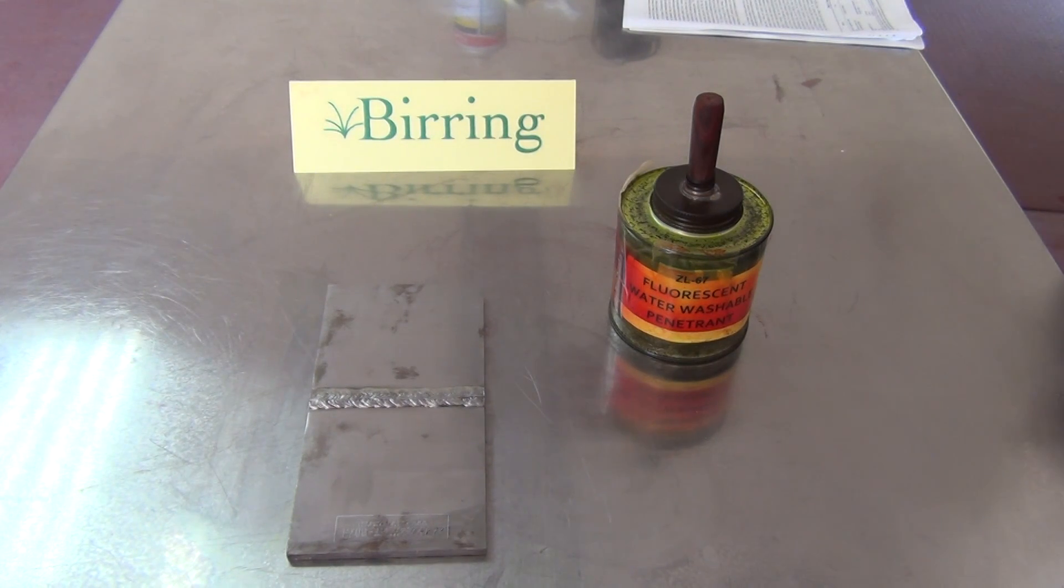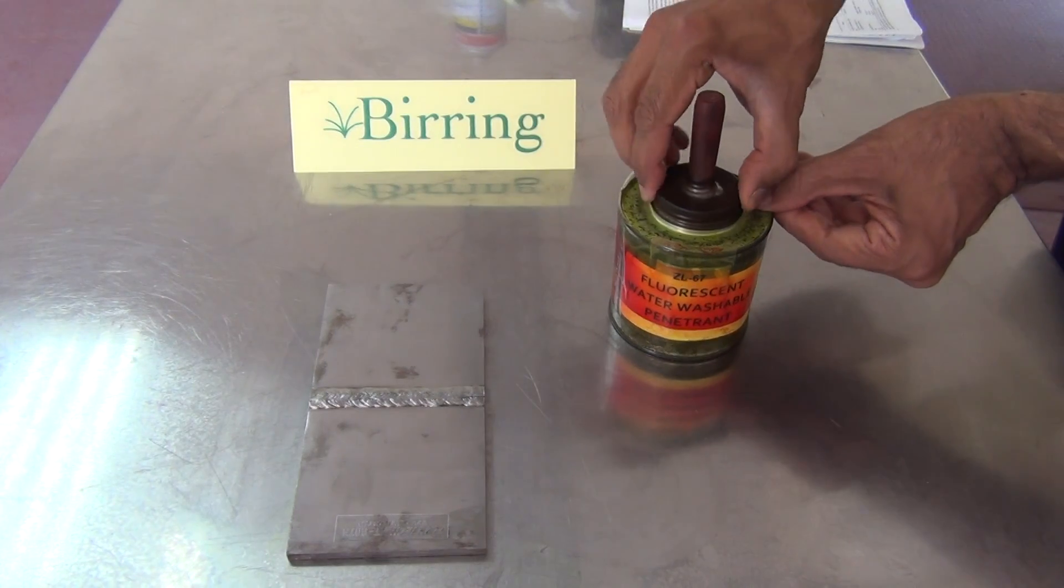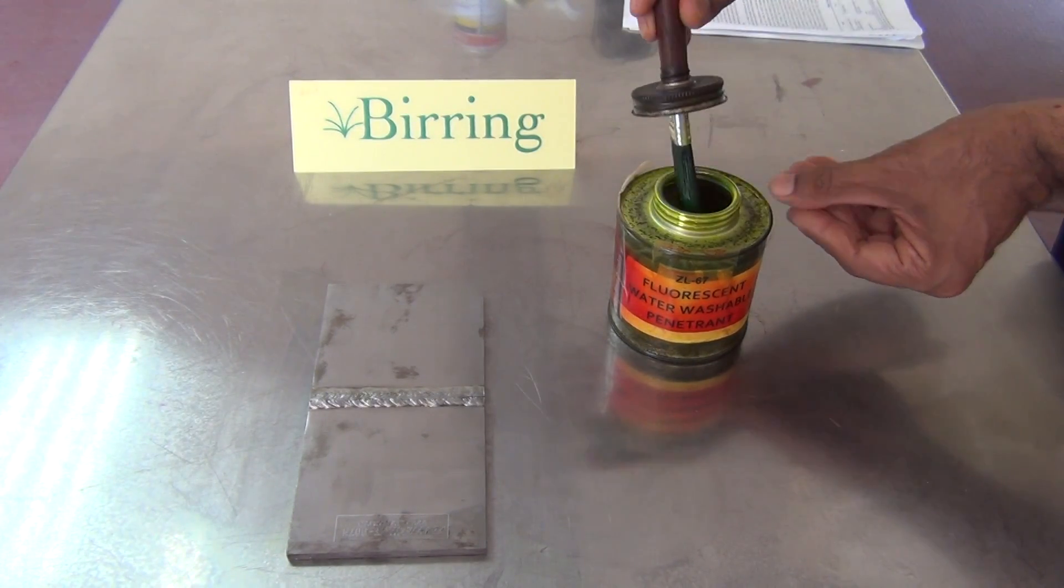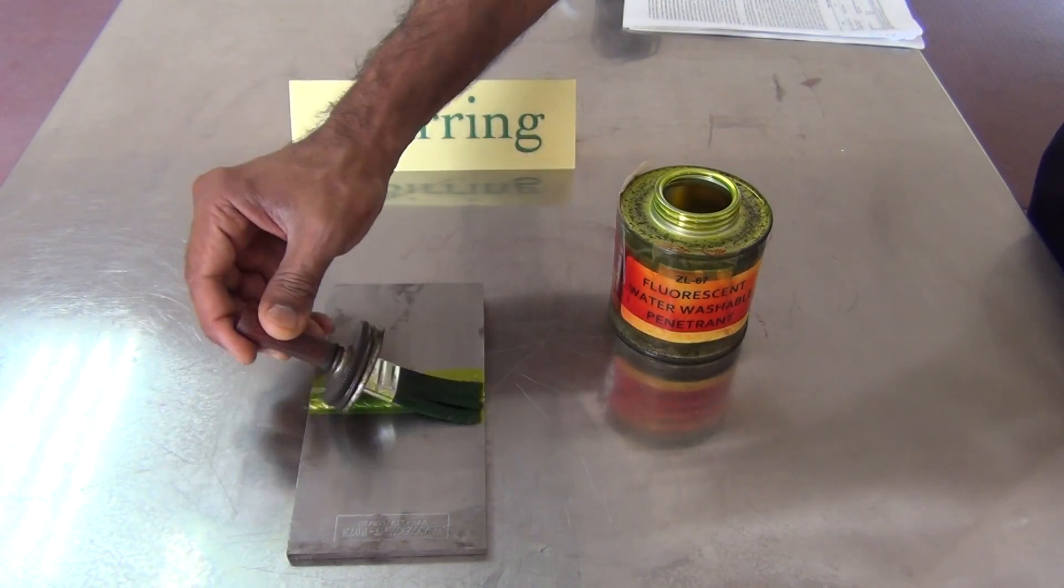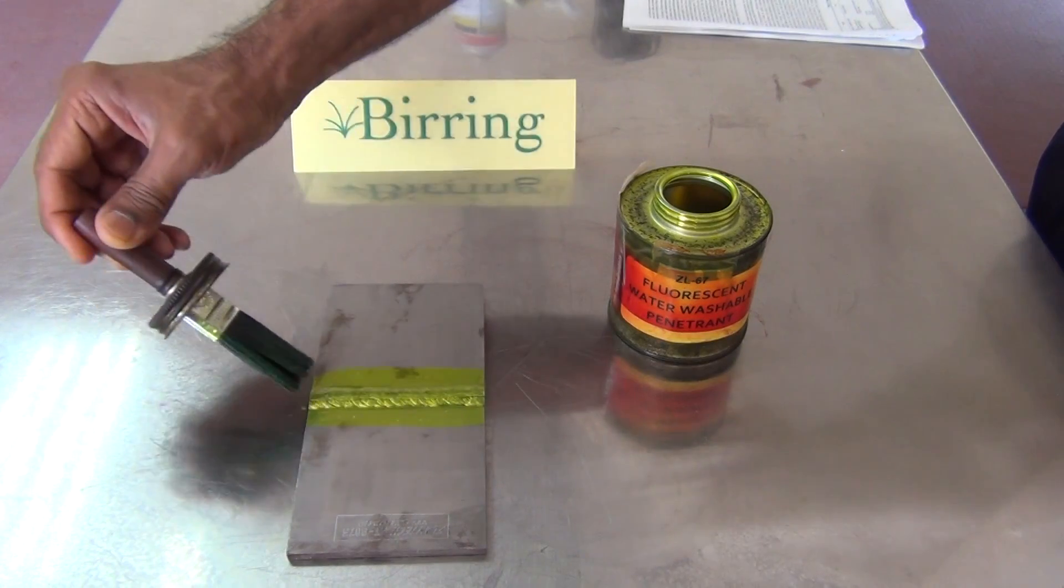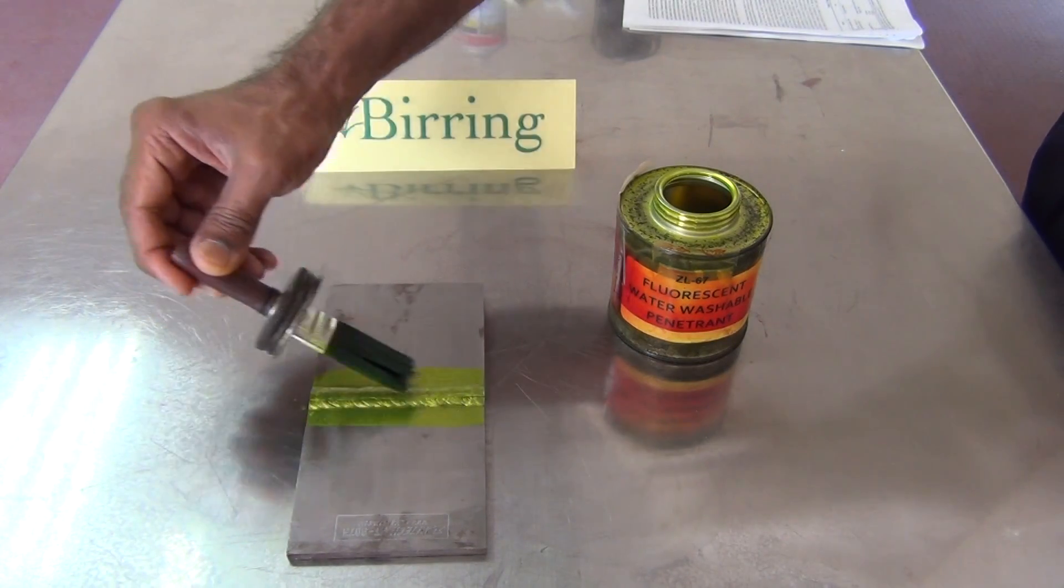In this step, I will be applying the penetrant to the sample. There are several methods of applying the penetrant that include dipping, brushing, flooding, or spraying. I will be using the brushing method on this sample because it's more controlled and I can apply it to localized areas of interest. This penetrant is ZL 67, which is sensitivity level 3. We simply apply it on the part and then leave it on for the dwell time. In this case, I have selected a dwell time of 10 minutes.